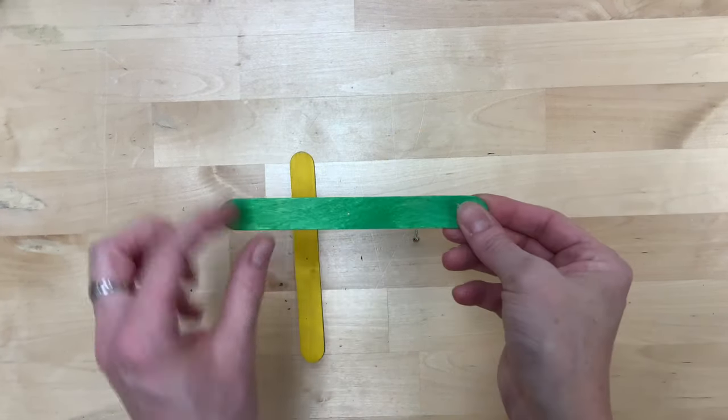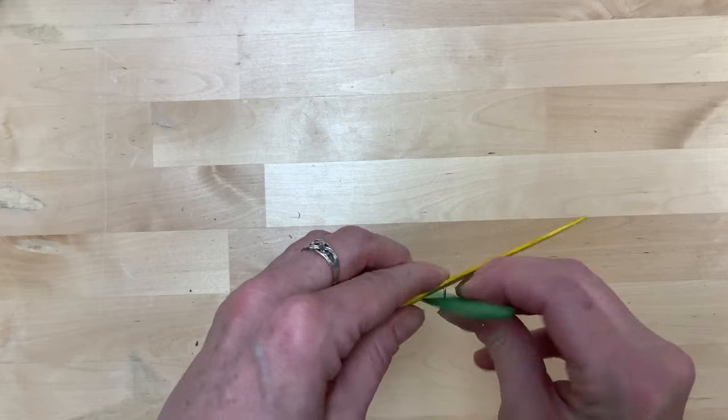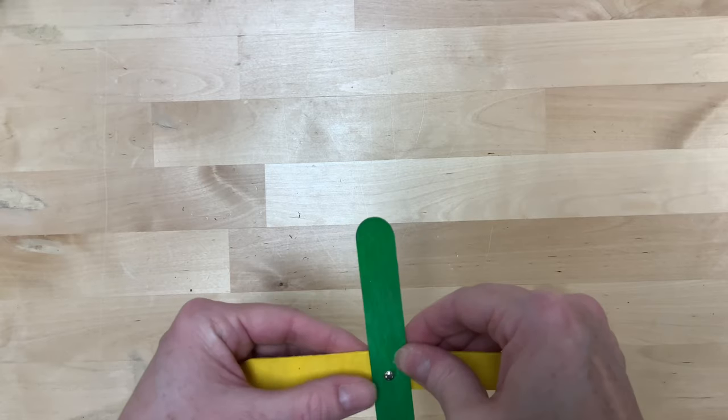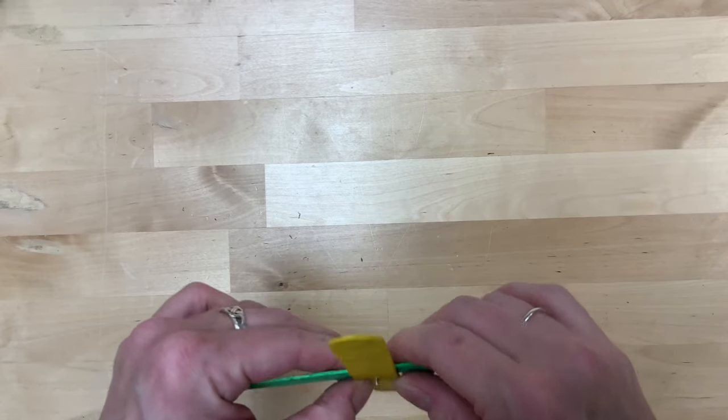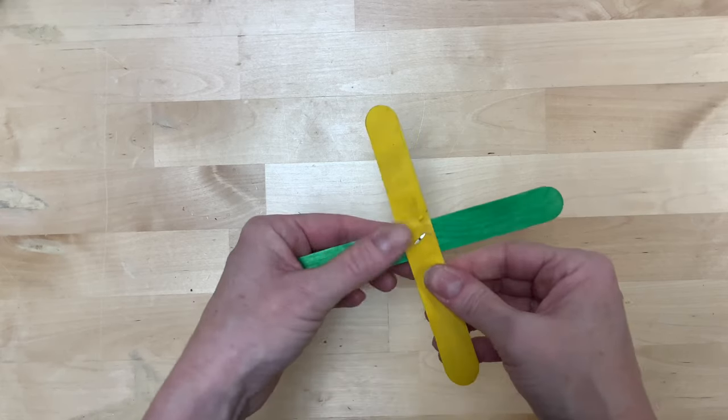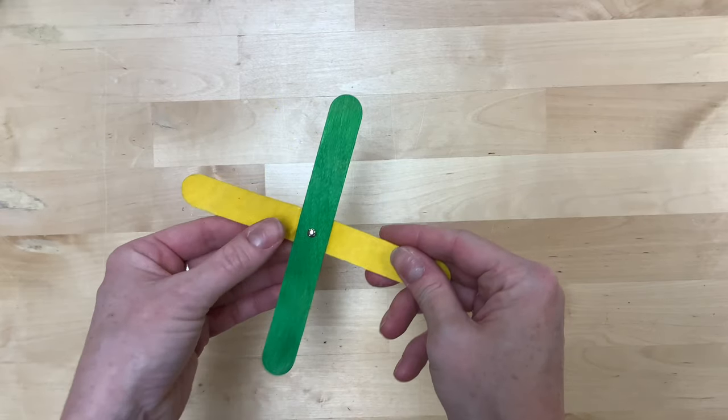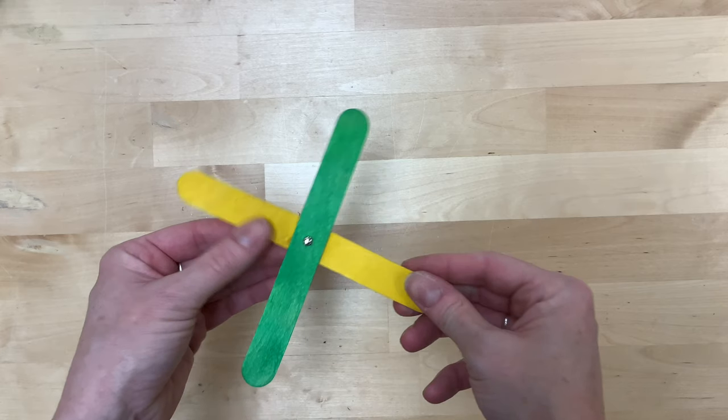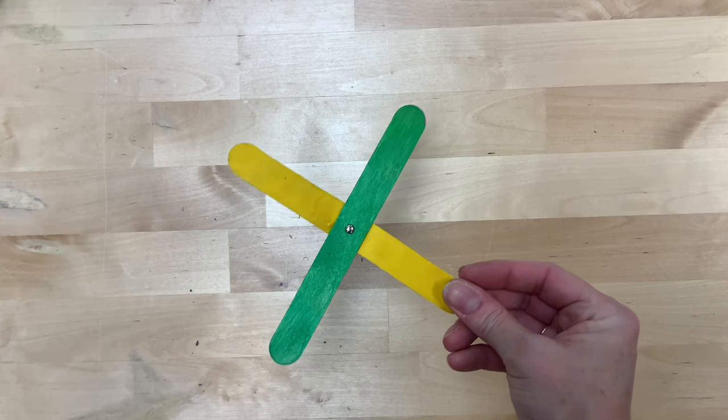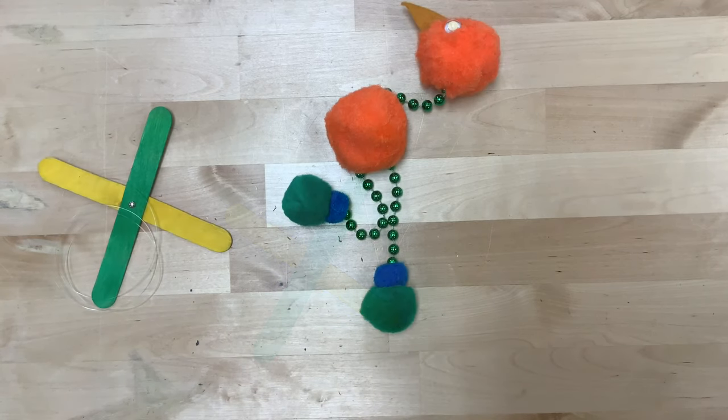Now we're going to take our two craft sticks, and there should be a very tiny hole halfway down in the middle of both of them. We're going to attach those together with the brad. You may have to push a little bit, but it should slide in pretty easily. Then we're going to push down that pointy bit on the bottom side to hold it into place. This T shape is what's going to control our bird. The two yellow bits are going to control the legs, the front side of the green will control the head, and the body is going to come up right to that brad in the middle.